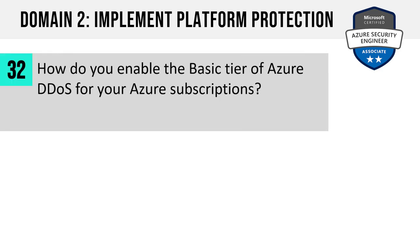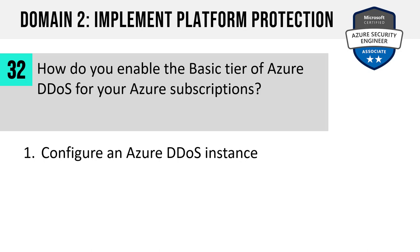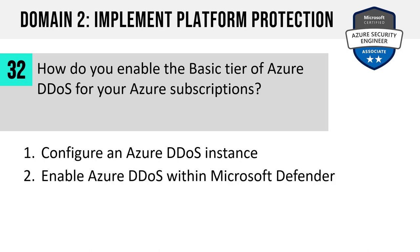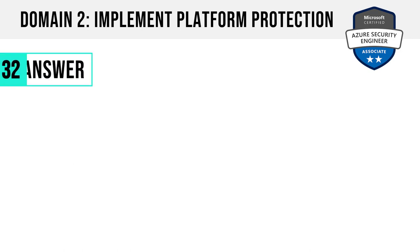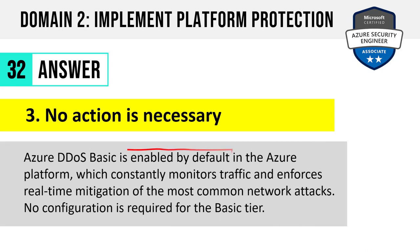Number 32. How do you enable the basic tier of Azure DDoS for your Azure subscriptions? Configure an Azure DDoS instance, enable Azure DDoS within Microsoft Defender, or no action is necessary? The answer is no action is necessary. The Azure DDoS basic tier is enabled by default in the Azure platform, which constantly monitors traffic and enforces real-time mitigation of the most common network attacks — no configuration or cost for that basic tier. The standard tier requires configuration, brings additional features, and brings considerable additional cost.